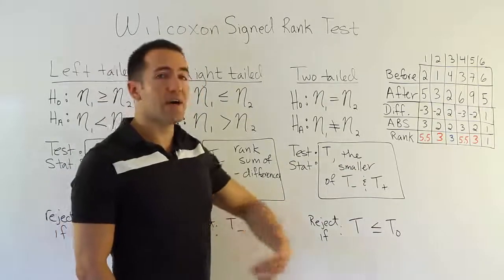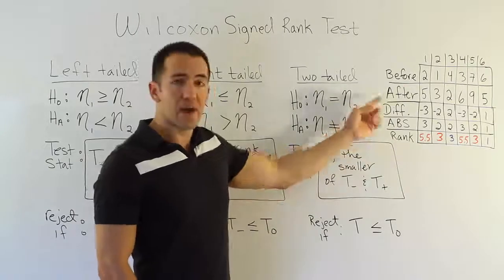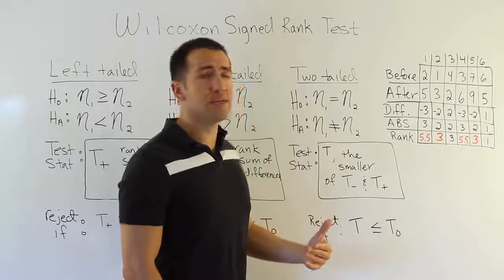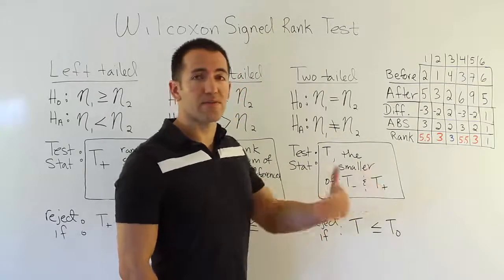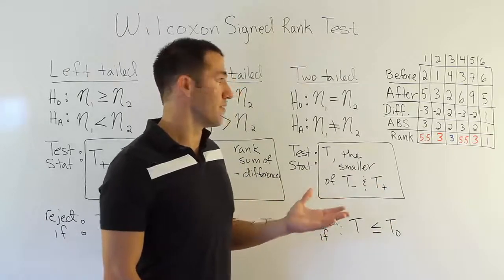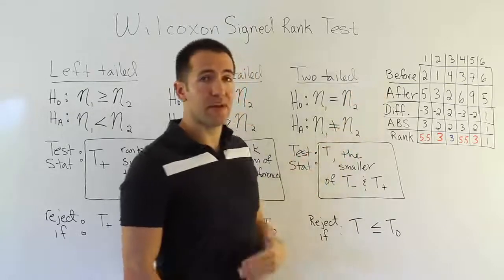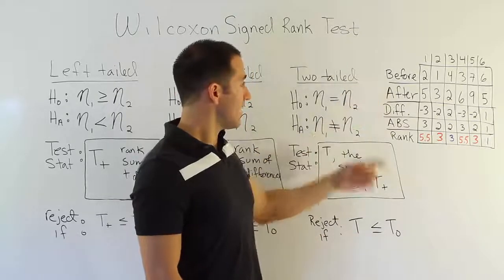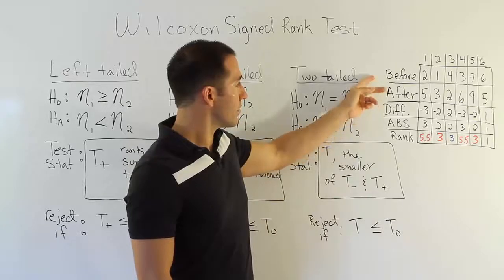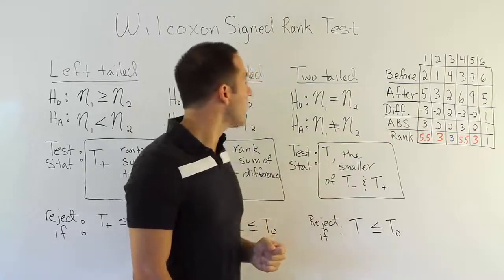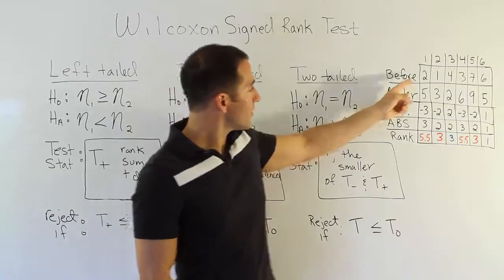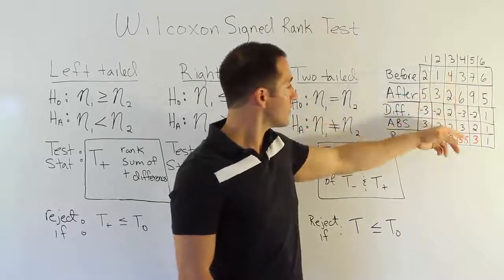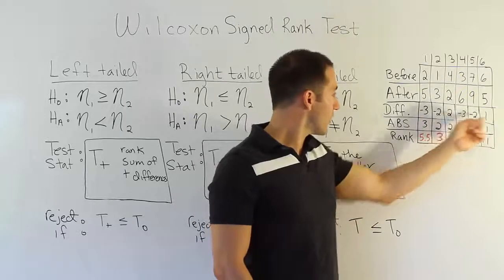Before the exercise regime is put into place, each of the six students will have a pull-up test where they do the most pull-ups they can in one single setting. So student 1 can only do 2, student 2 can only do 1, and then 4, 3, 7, and 6. Then we give them an exercise routine to follow for a couple of weeks and test them again, looking at their performance after the fact.